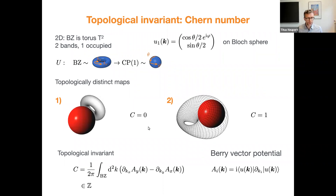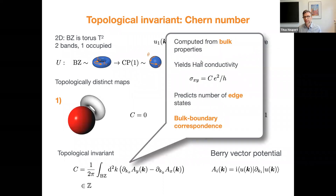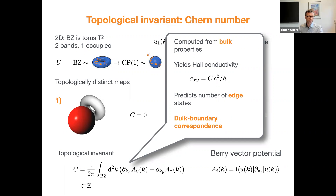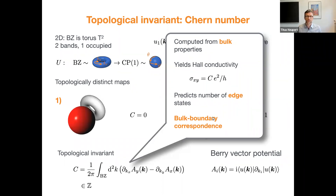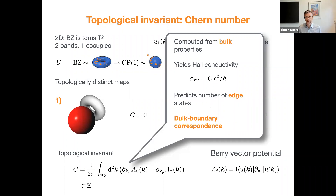The Chern number also has physical significance: it is exactly the Hall conductivity, given by C times e² over h. This Chern number uses only bulk information and predicts whether the open system has boundary states and what the Hall conductivity is. This is the topological bulk-boundary correspondence — the bulk electronic structure predicts what happens when a boundary is introduced.